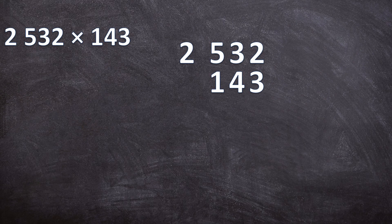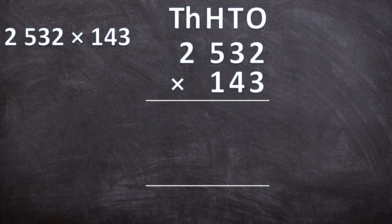Here we have 2532 times 143. Remember, the first thing you do is write it neatly underneath each other, making sure ones, tens, and hundreds are directly underneath each other. Write your multiplication sign with two lines — three spaces open between them. Remember, you split the second number and multiply separately with 3, 40, and 100.